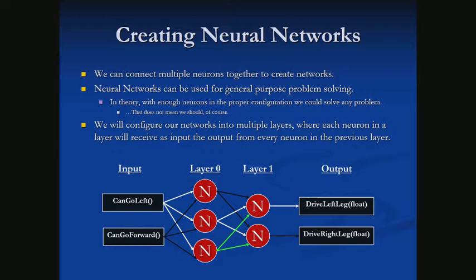We're going to make a bunch of neurons and connect them together. A neural network can be used for general purpose problem solving. In theory, we could use a neural network to solve almost any problem. It doesn't necessarily mean it's the best solution, but that idea is pretty powerful.